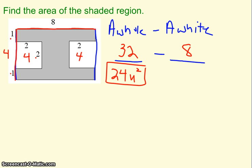So if you can really picture the rectangle being a piece of construction paper with those two squares cut out, area of the whole minus the area of the white is a great way to go.